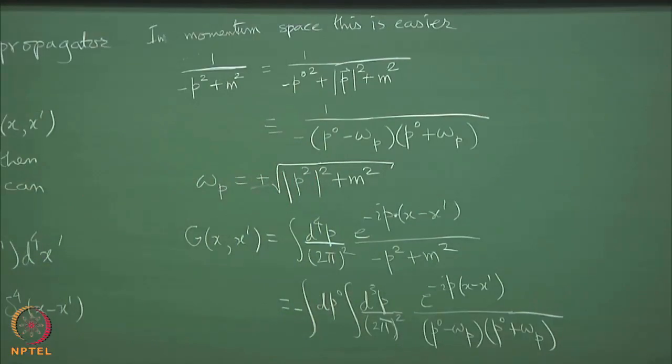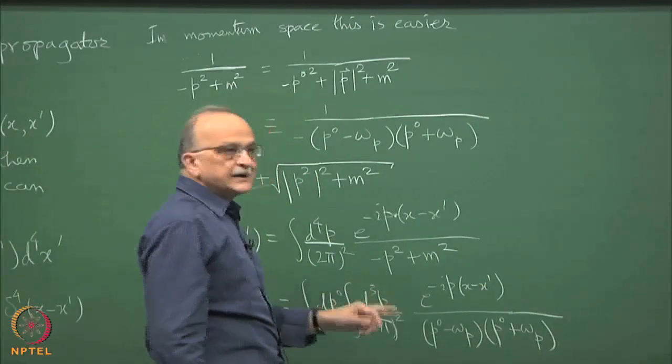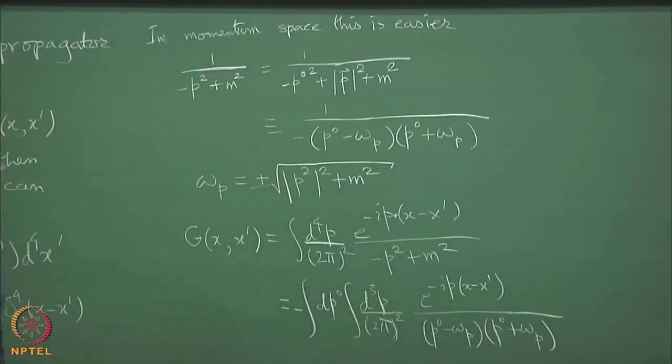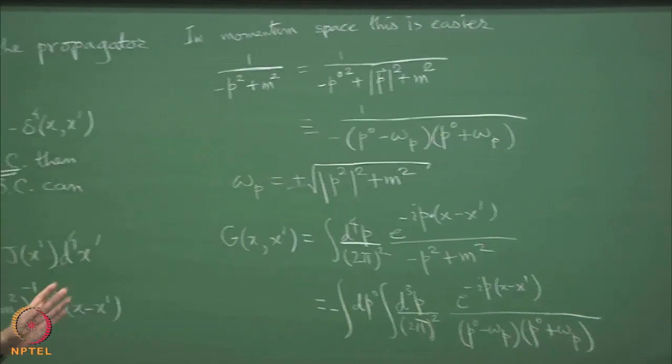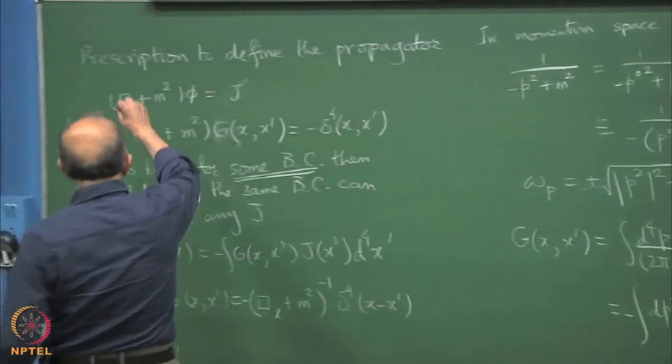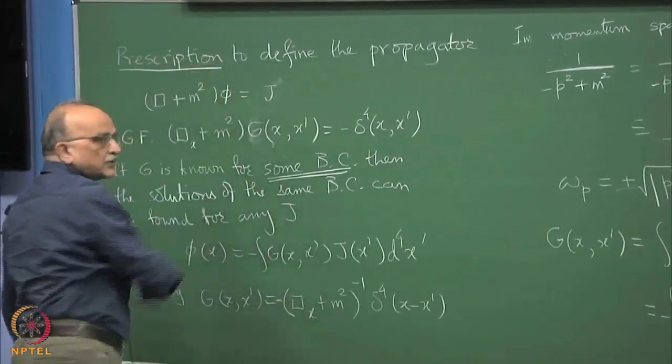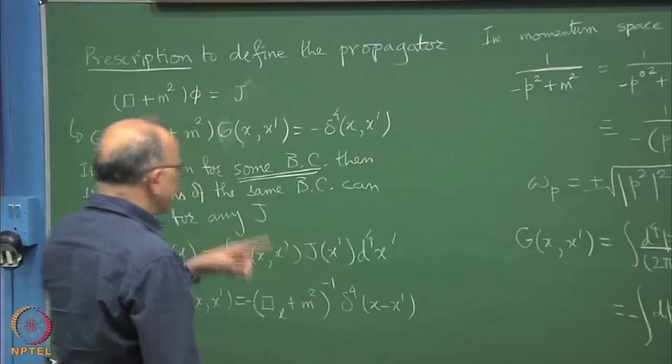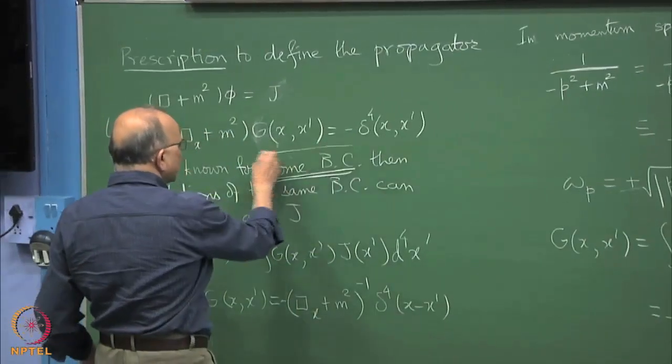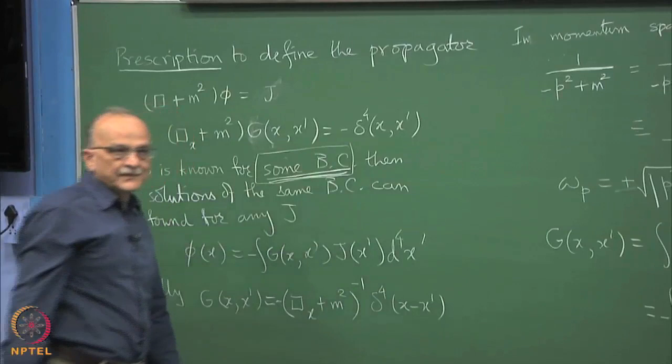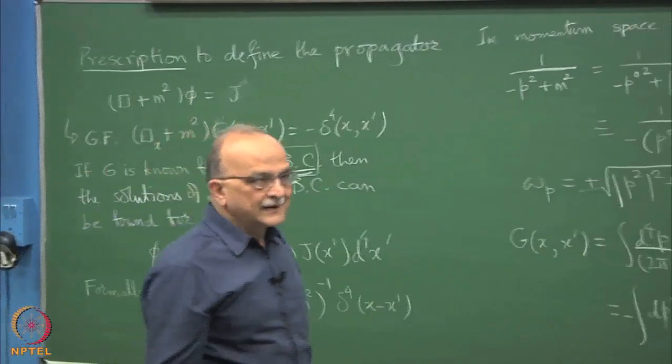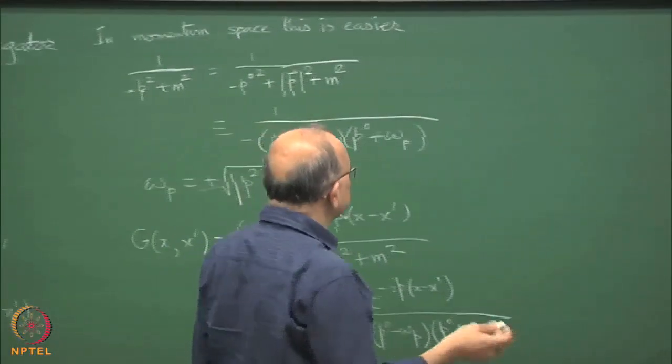This is the formal Green's function and you have to give it some meaning. Because of these poles, how will you do the integration across these poles? So it is split up into d p0 and then integral d 3 p over 2 pi cubed, with an overall minus sign. Now the question is of how you negotiate the poles in the p0 axis and there are several prescriptions you can give. So the question is of the prescription to provide to identify the Green's function that you need for your boundary condition.